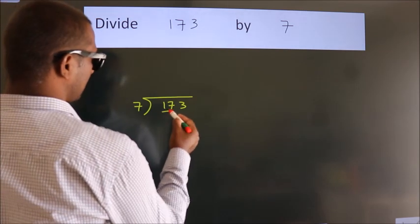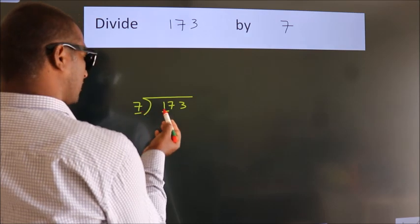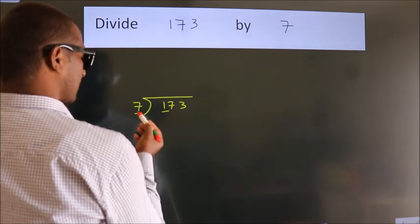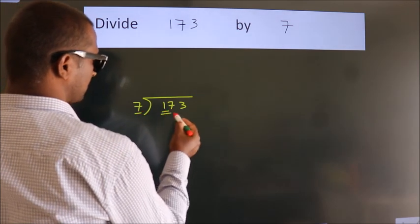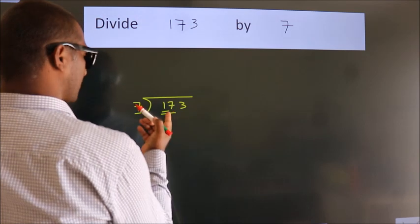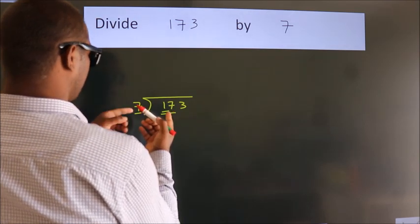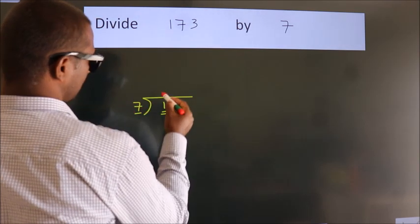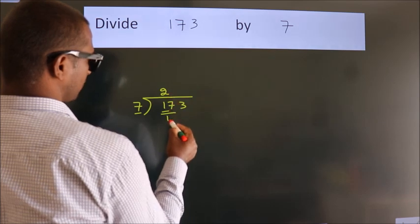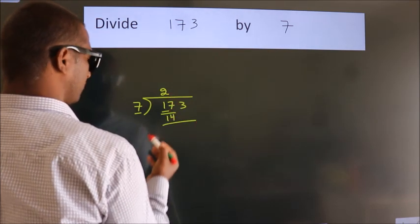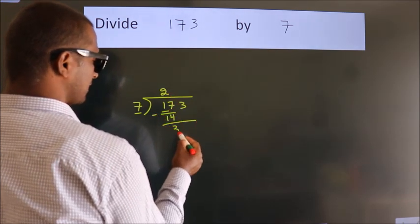Here we have 1, here 7. 1 is smaller than 7, so we should take two numbers, 17. A number close to 17 in the 7 table is 7 twos, 14. Now we should subtract. We get 3.